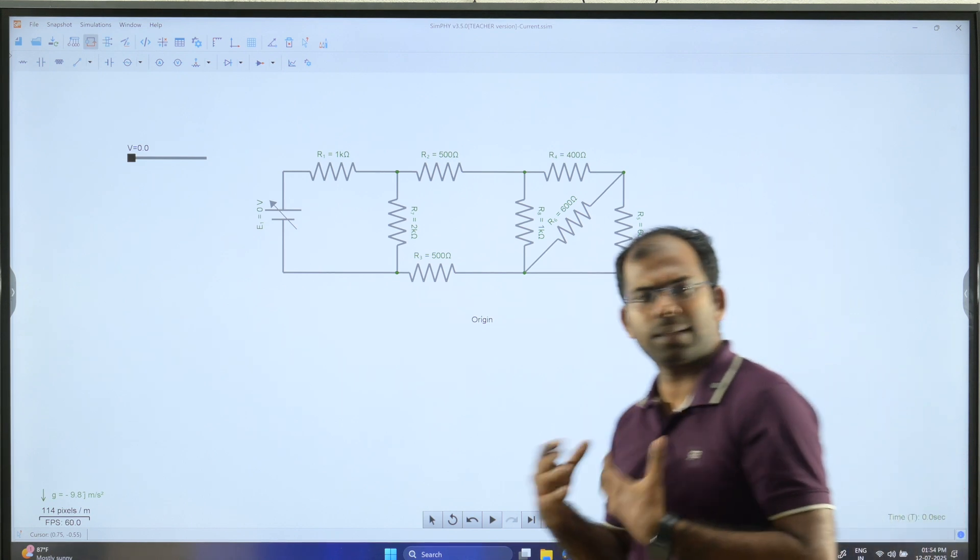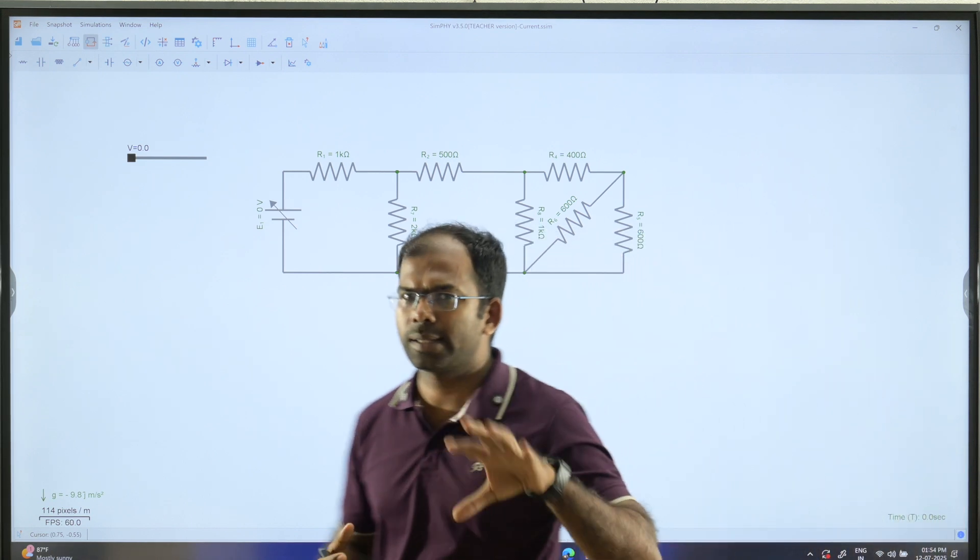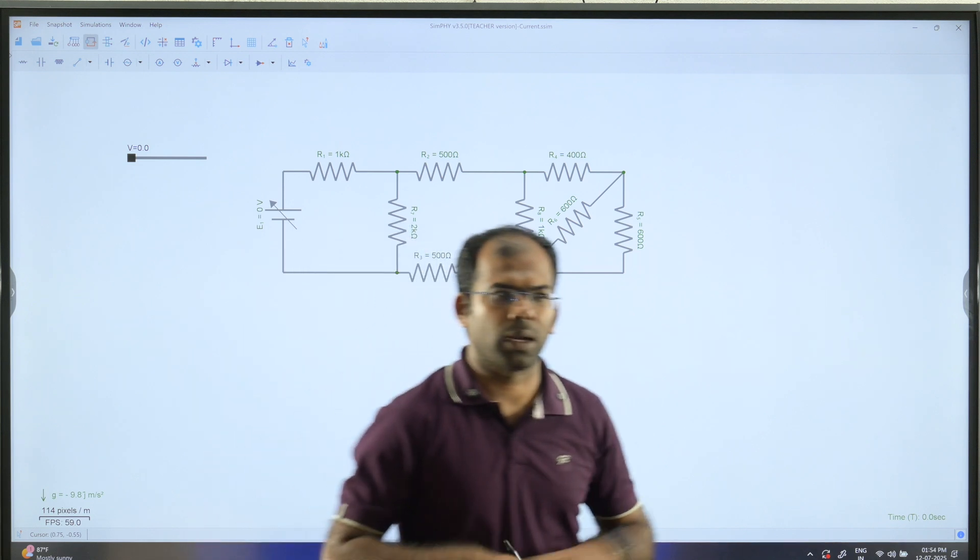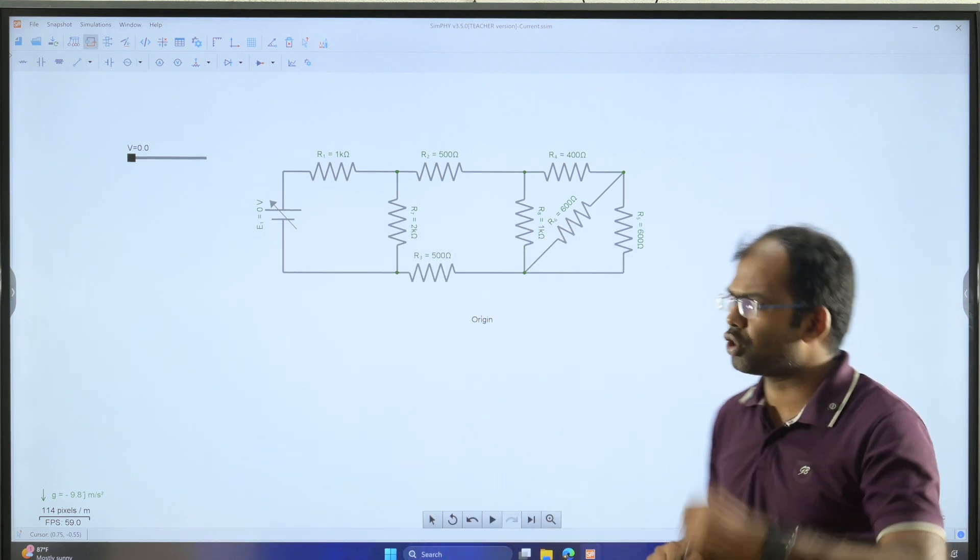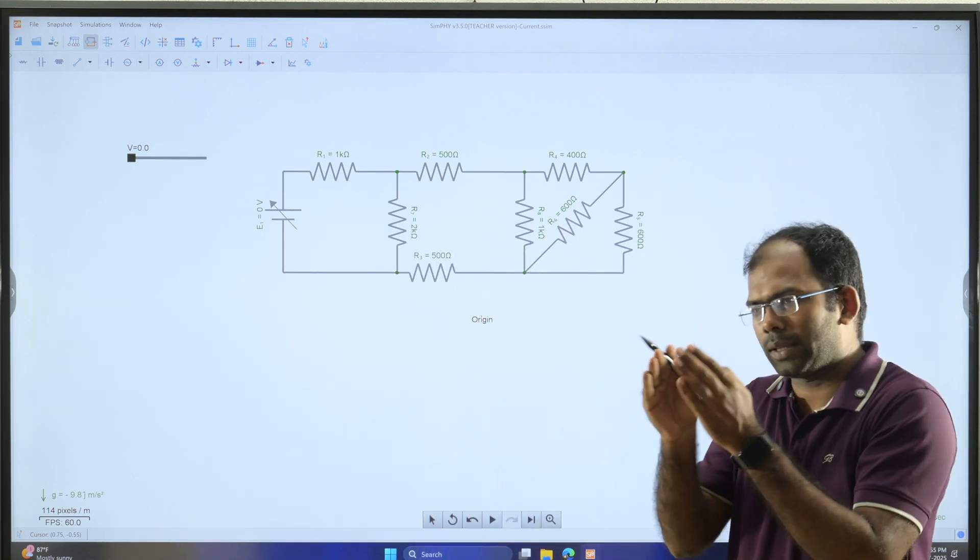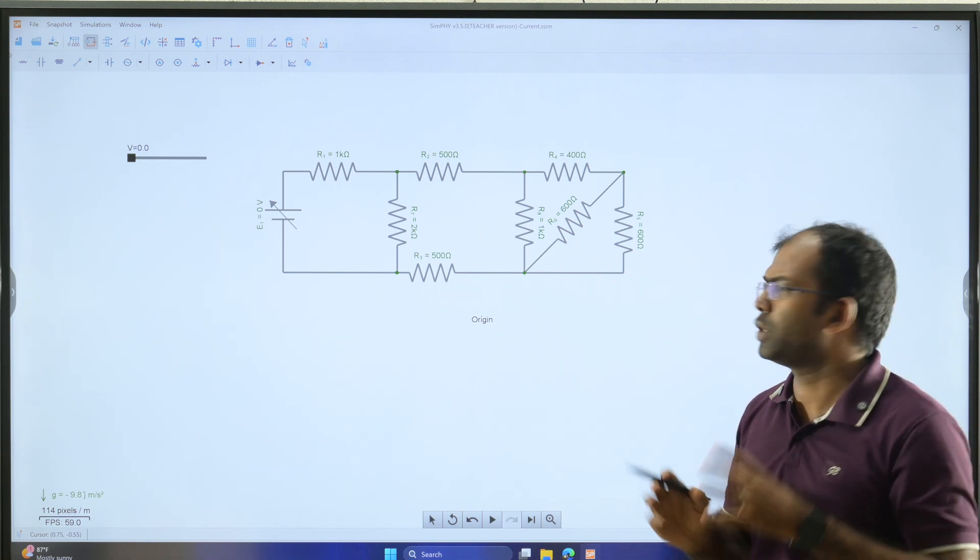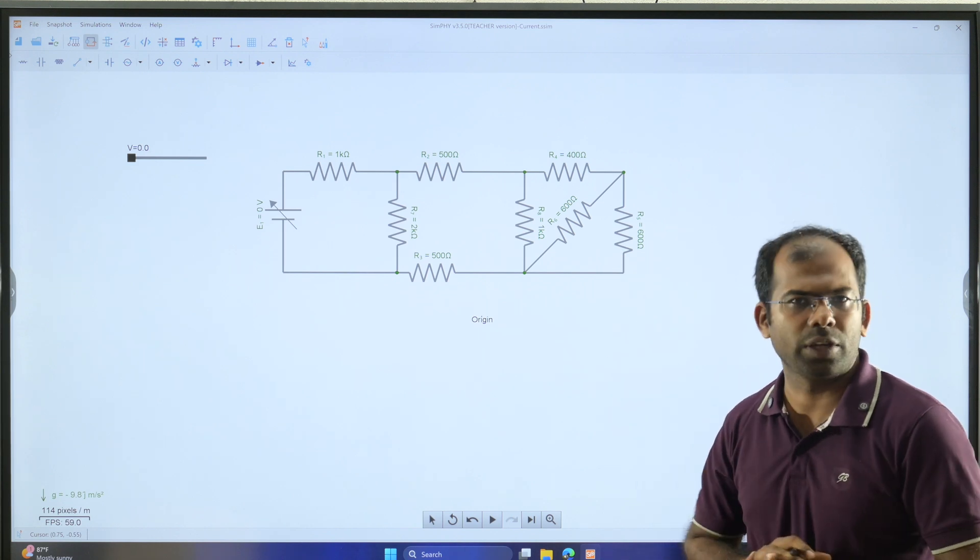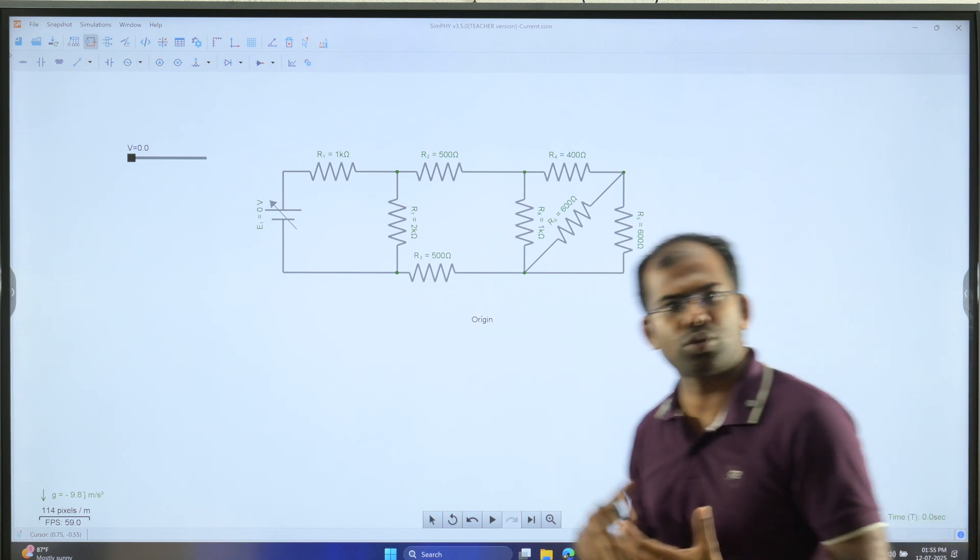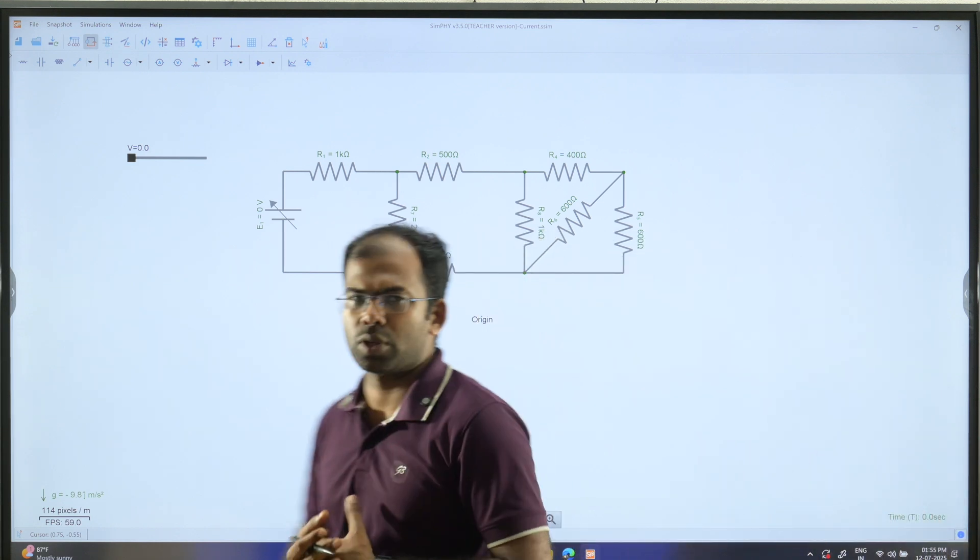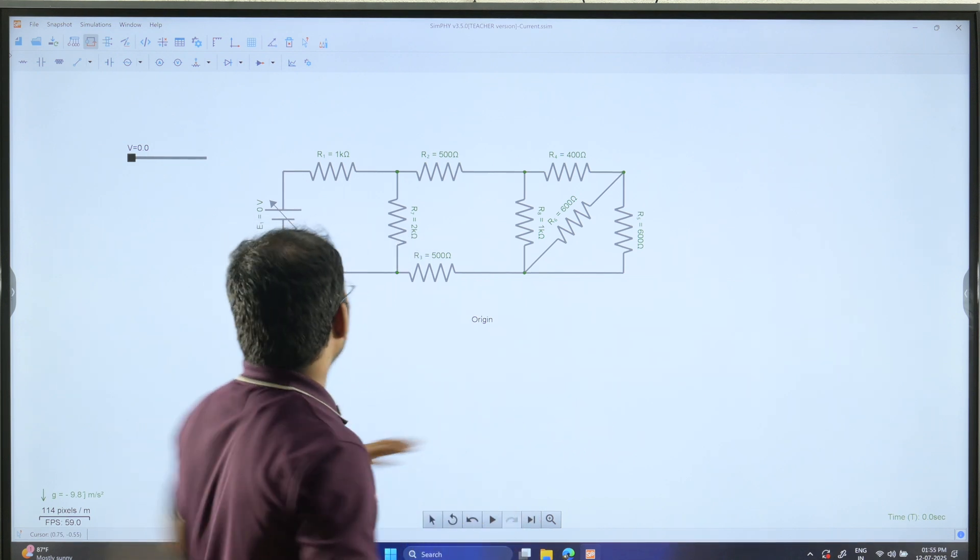In simulation, wherever current divides, we call it parallel, and where current joins, it's series. The conditions of parallel addition are used to reduce the circuit into an equivalent sequence.